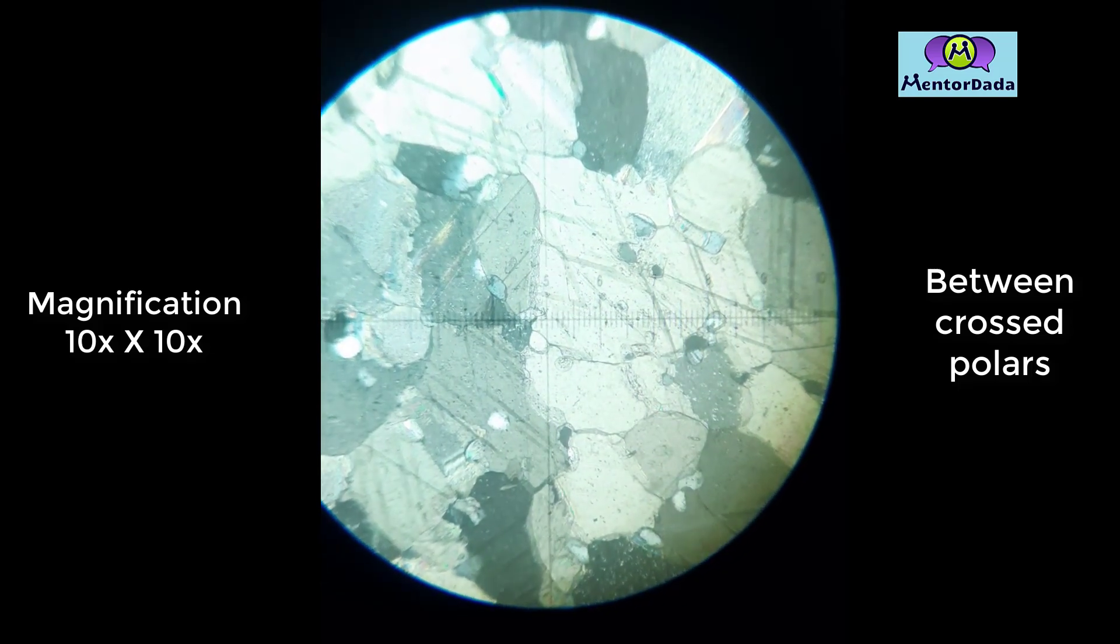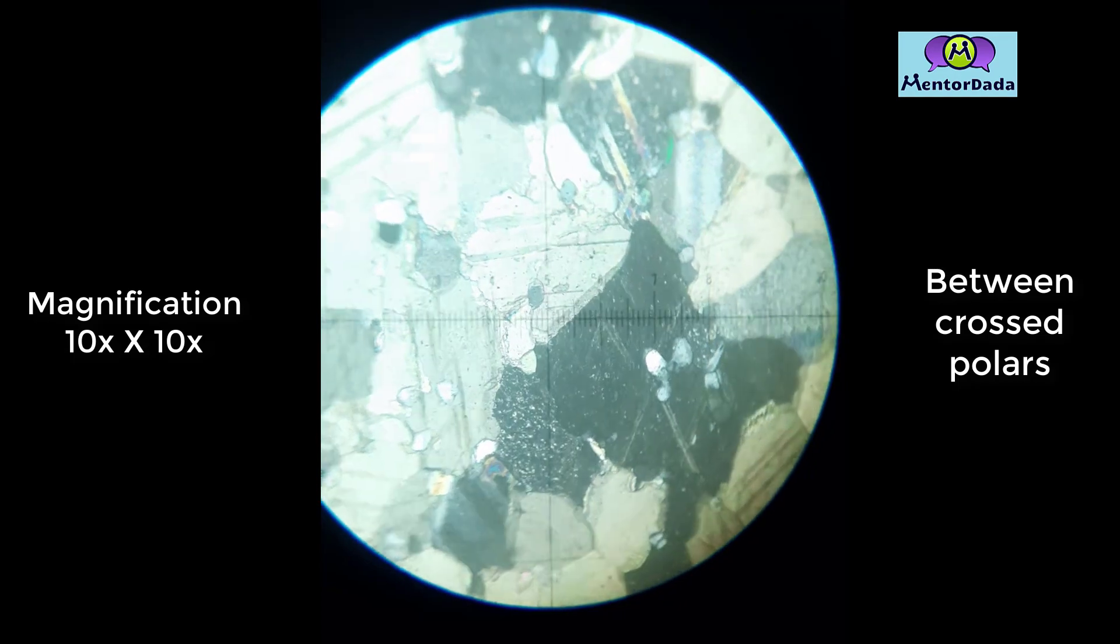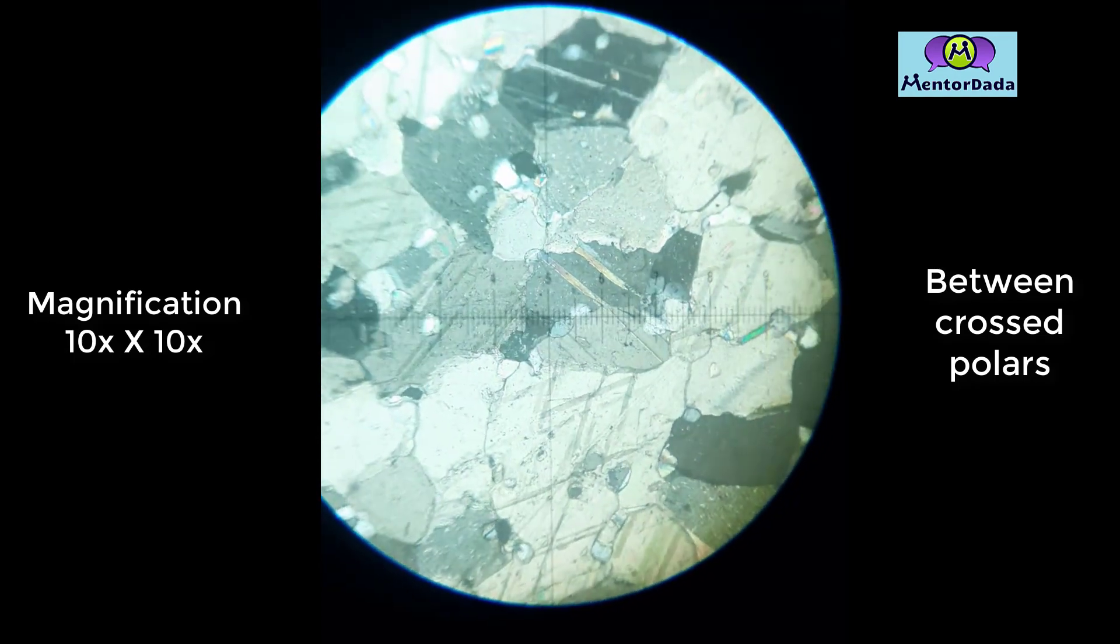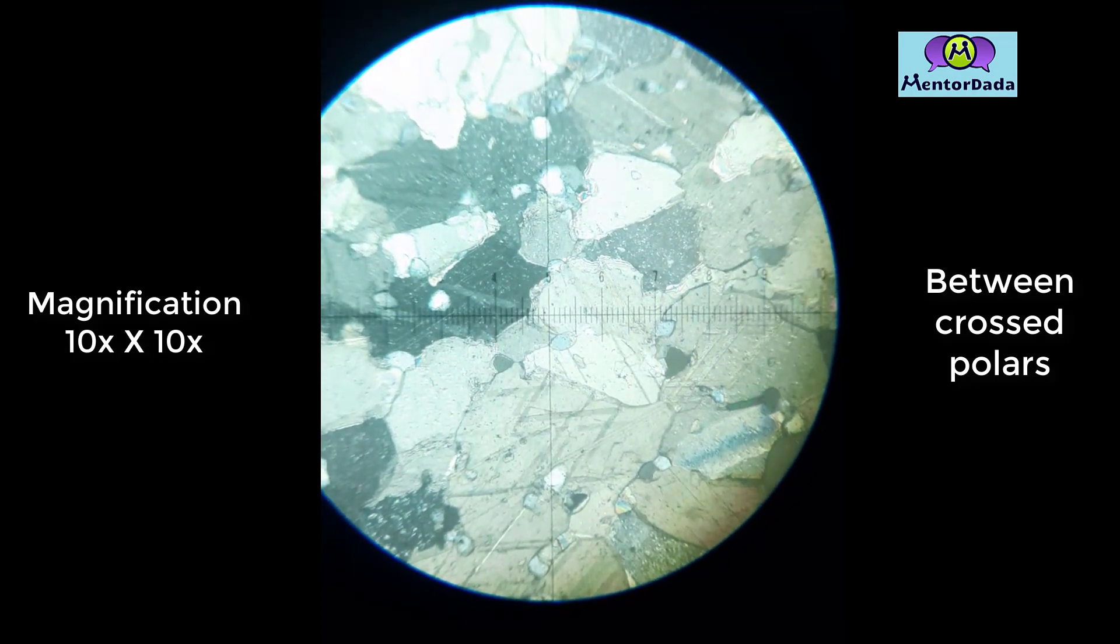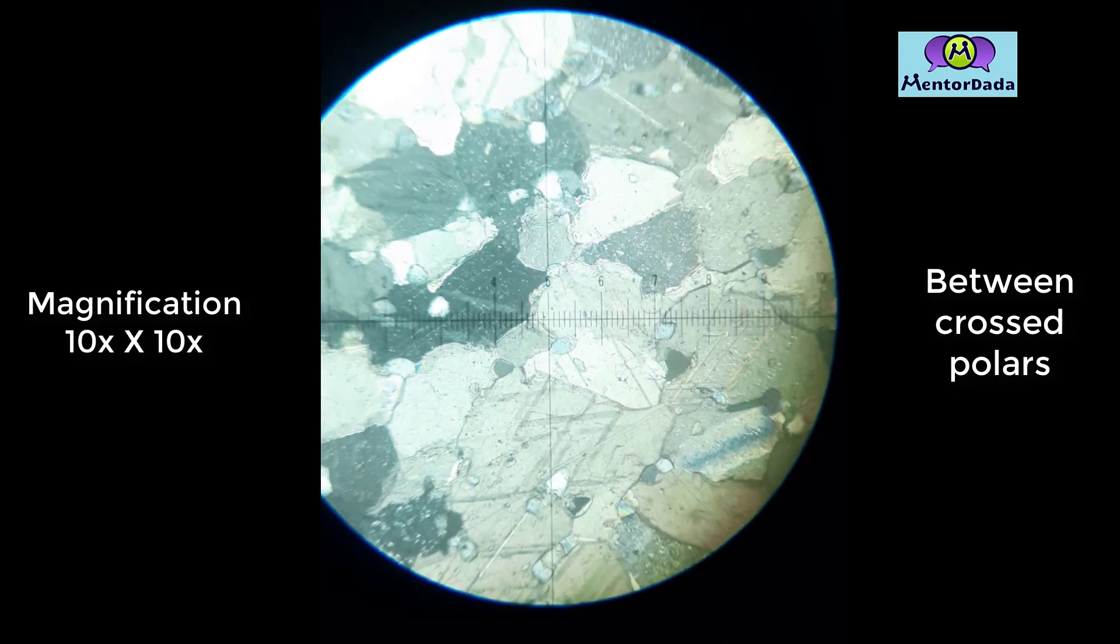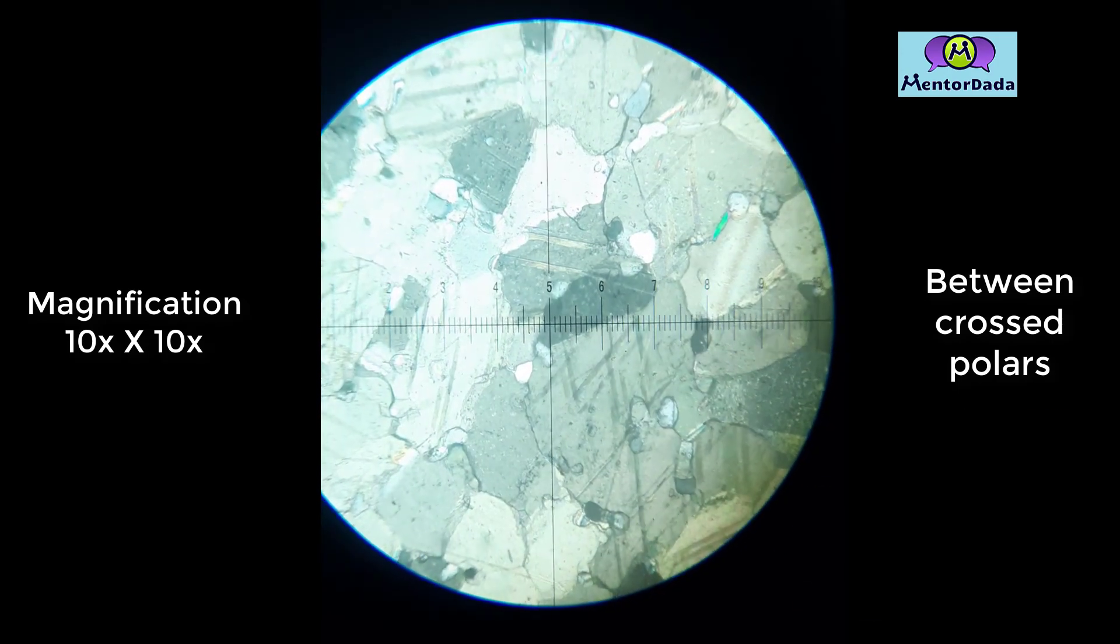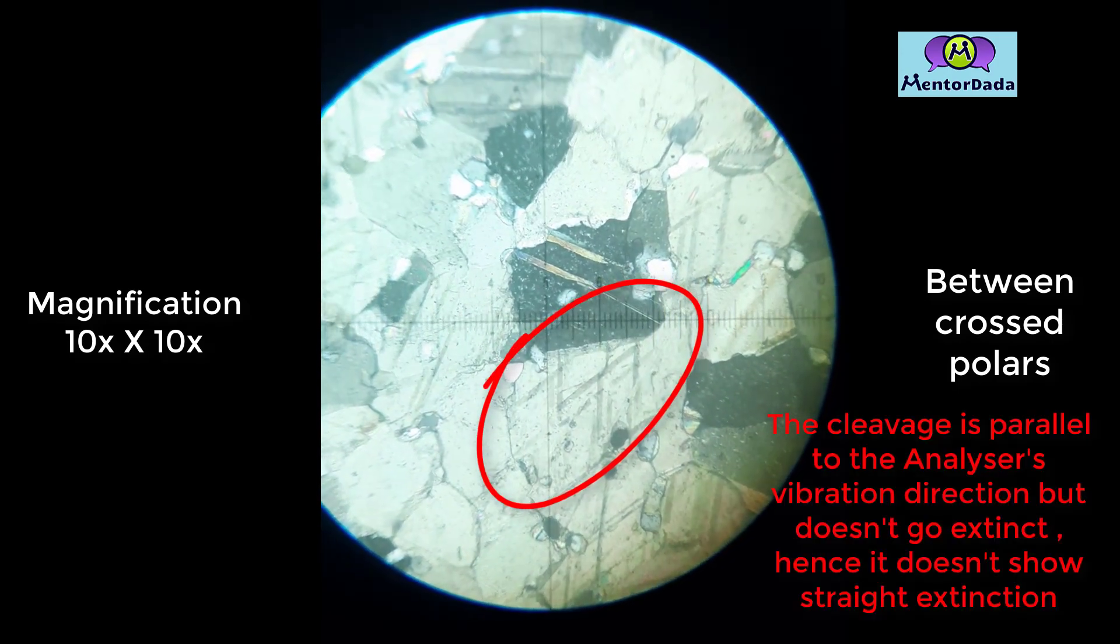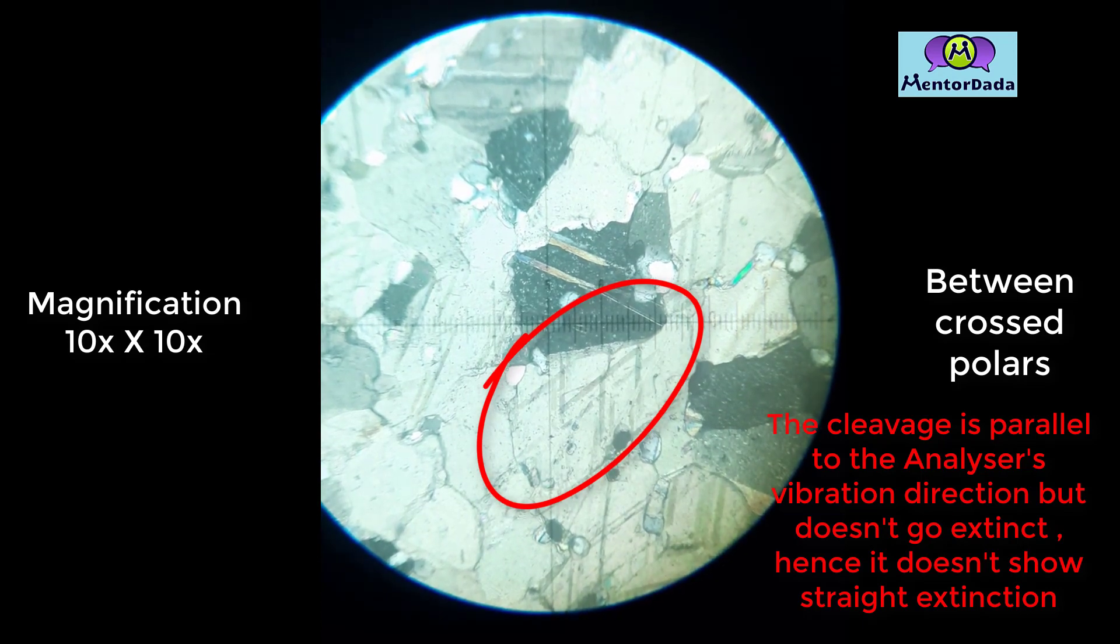The mineral shows inclined extinction because when we align one of its cleavages with any of the hairlines of the microscope, the mineral does not go to extinction.